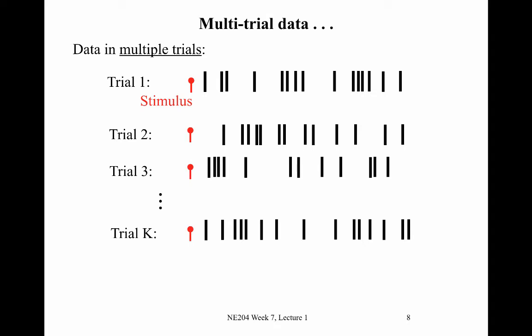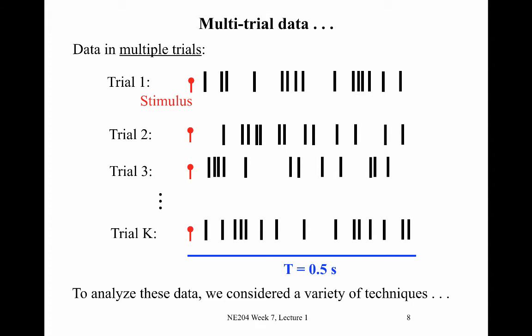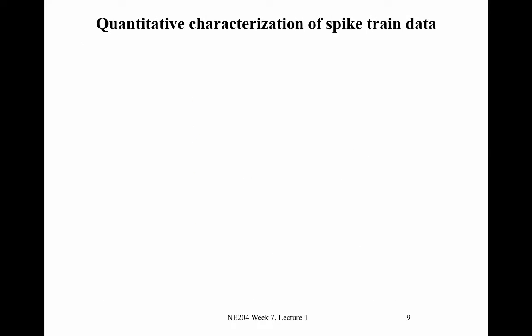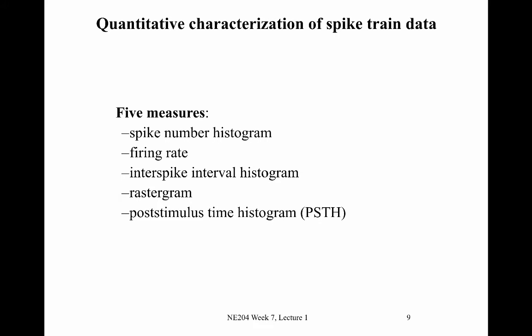We're recording from the same neuron each time, presenting the same stimulus, and observing the resulting spiking activity. For concreteness, let's say we record for half a second, setting big T equal to 0.5 seconds. We thought about different ways to analyze these data. The five quantitative characterizations of spike train data we focused on are: the spike number histogram, the firing rate, the interspike interval histogram, the rastogram, and the post-stimulus time histogram, or PSTH.